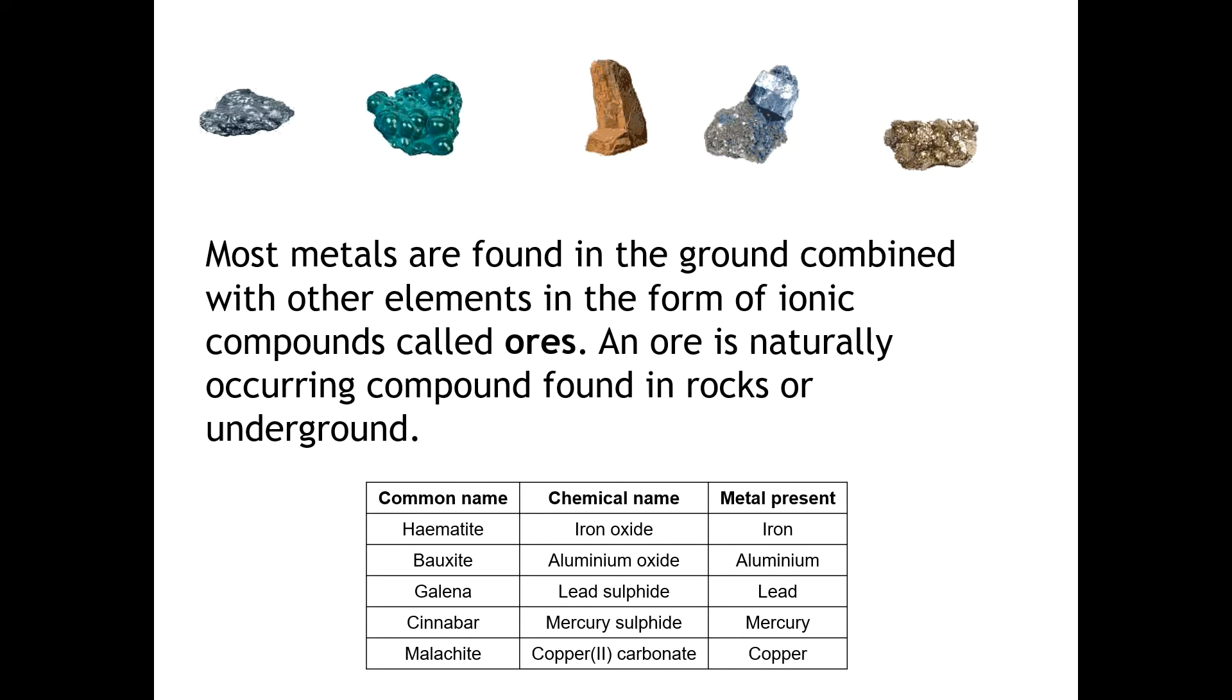Various metals tend to be found in rocks joined to various elements, such as oxygen, sulfur, and carbon. Most metals are found in the ground combined with other elements in the form of ionic compounds, such as copper oxide or iron oxide, and these compounds are called ores. An ore is a naturally occurring compound found in rocks or underground. For instance, hematite contains iron, bauxite contains aluminum, and these are other ones that can contain lead, mercury, or copper.